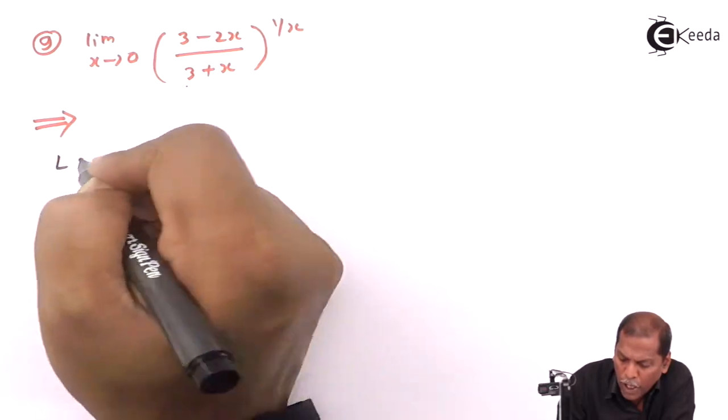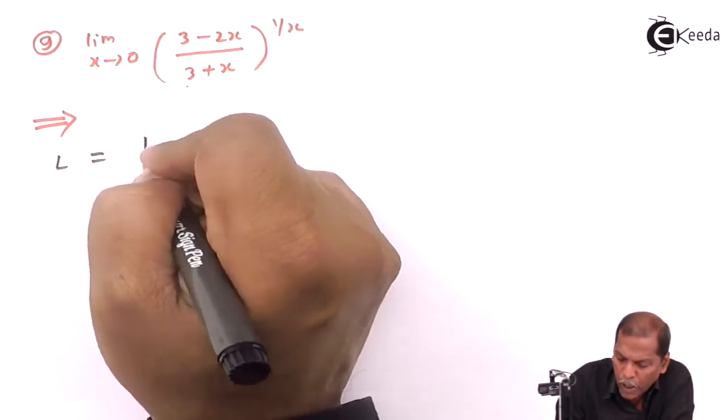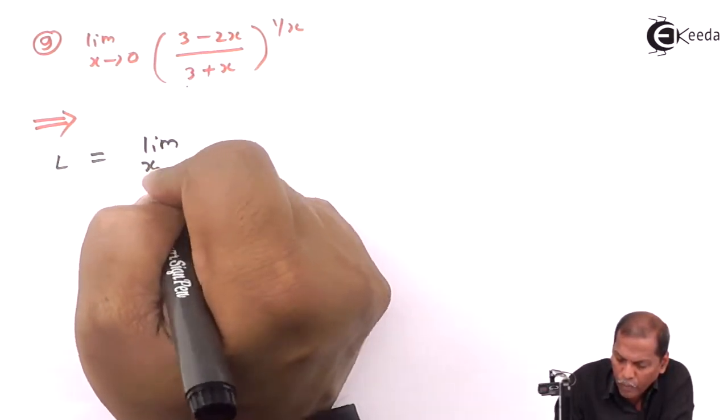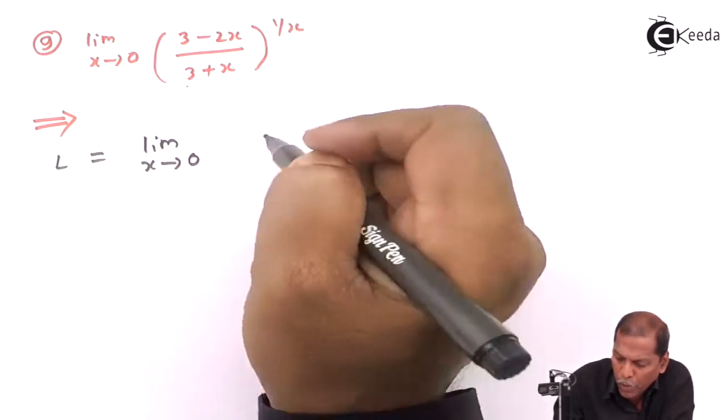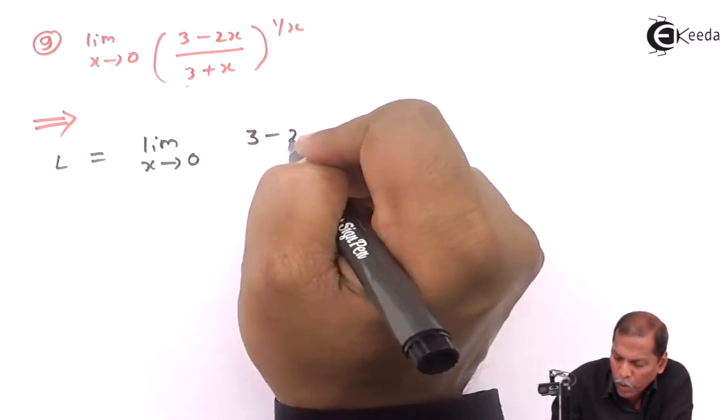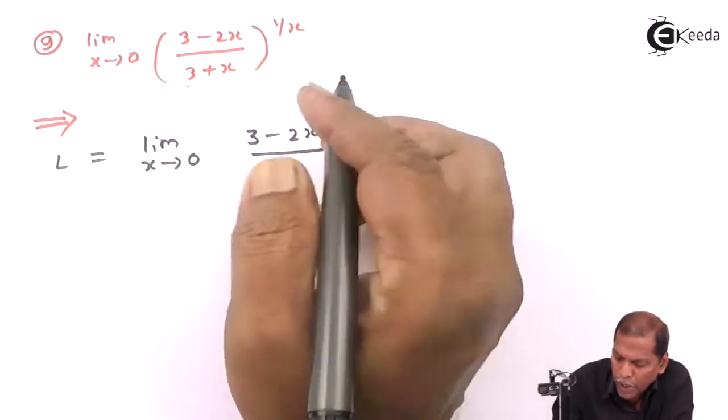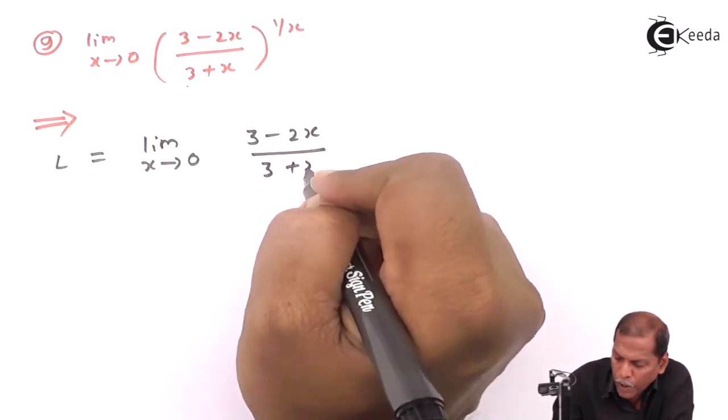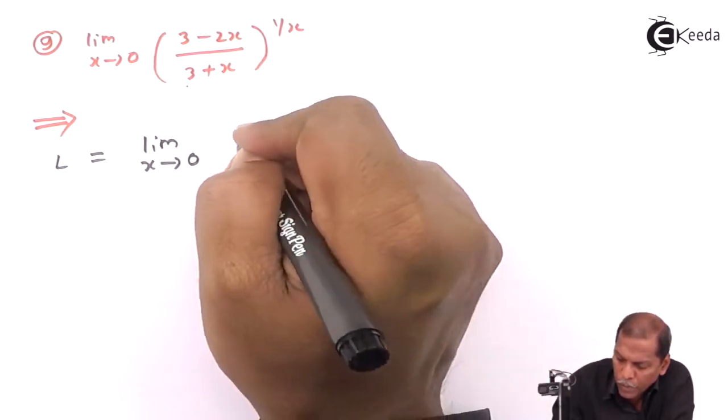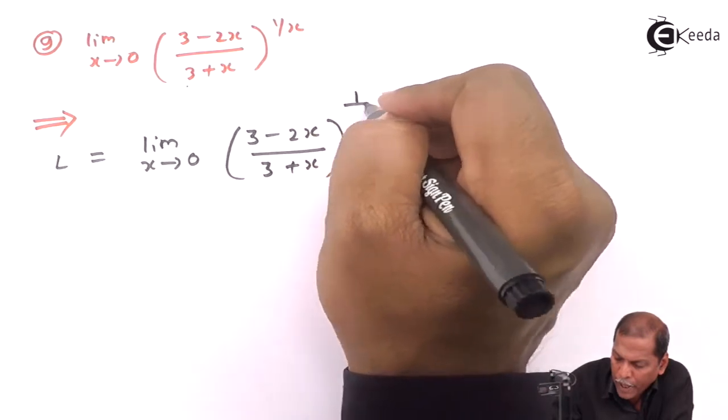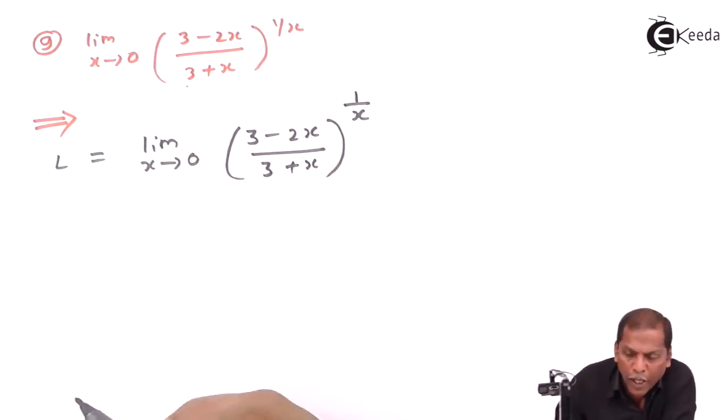First of all, L equals limit x tends to 0, (3 minus 2x upon 3 plus x) whole bracket raised to 1 upon x.